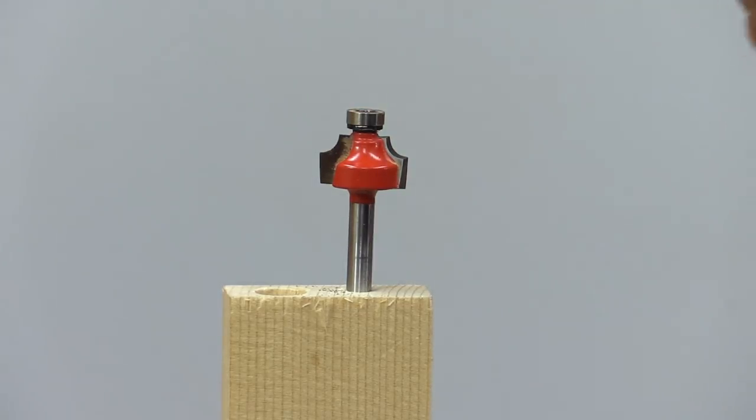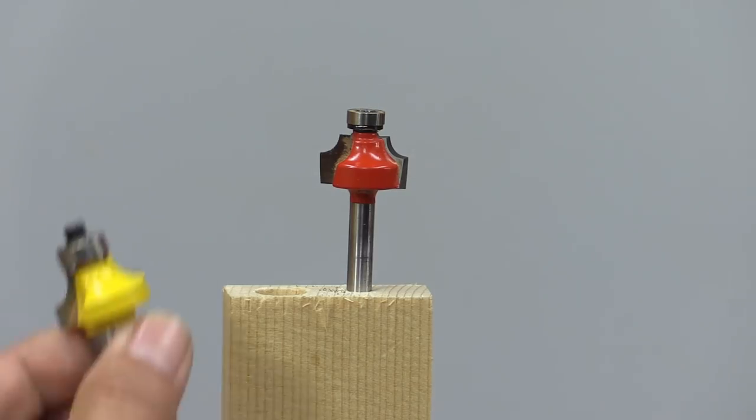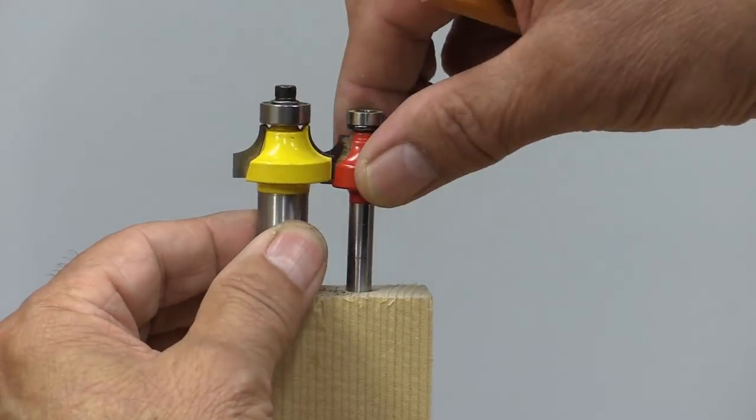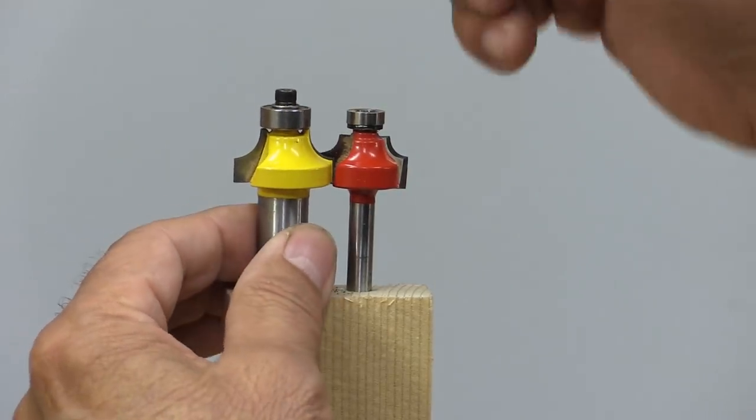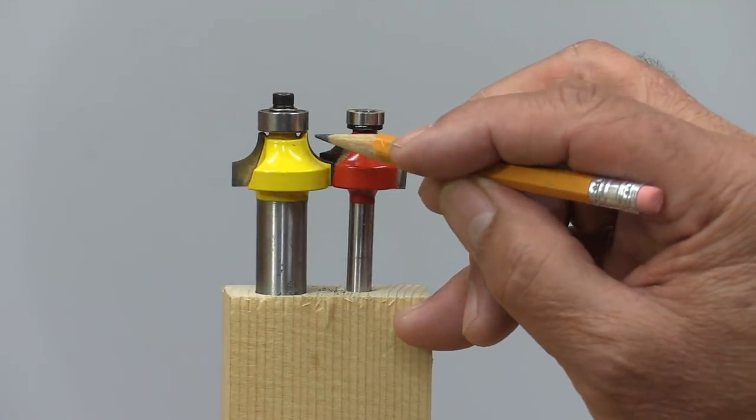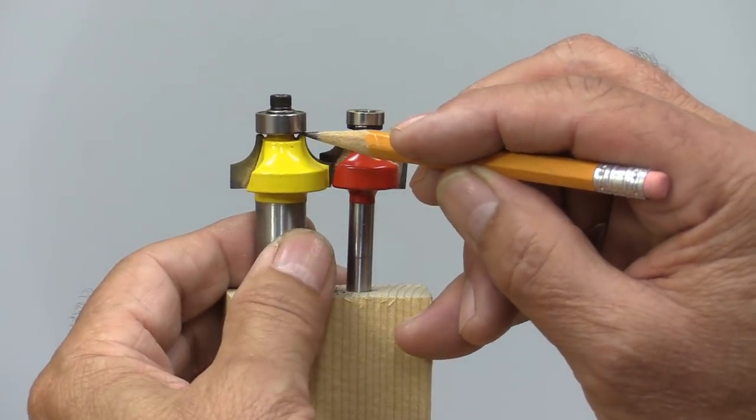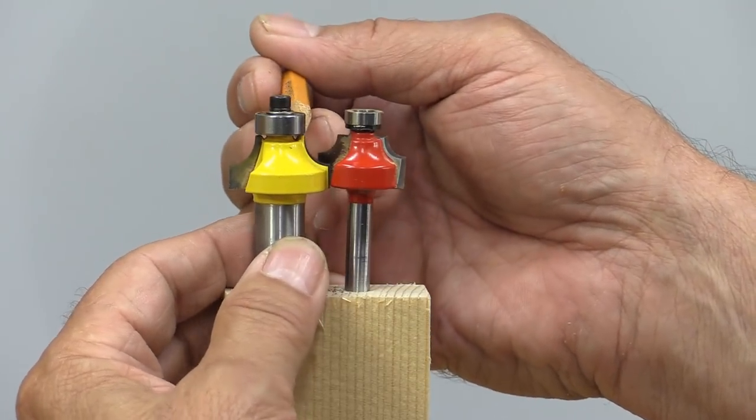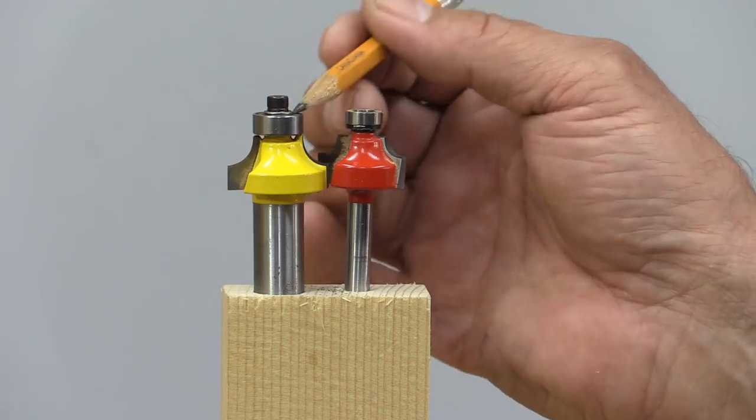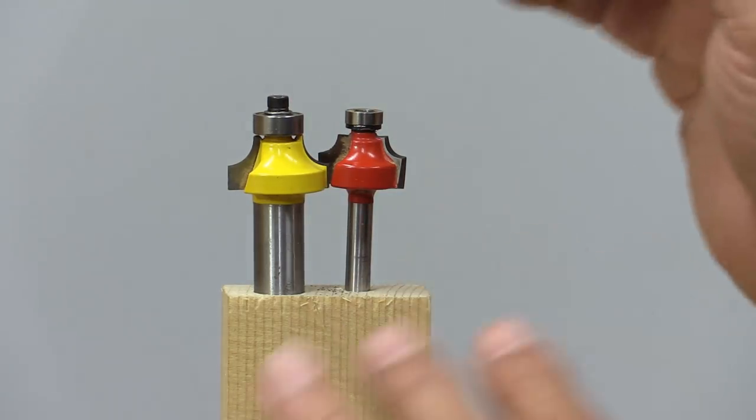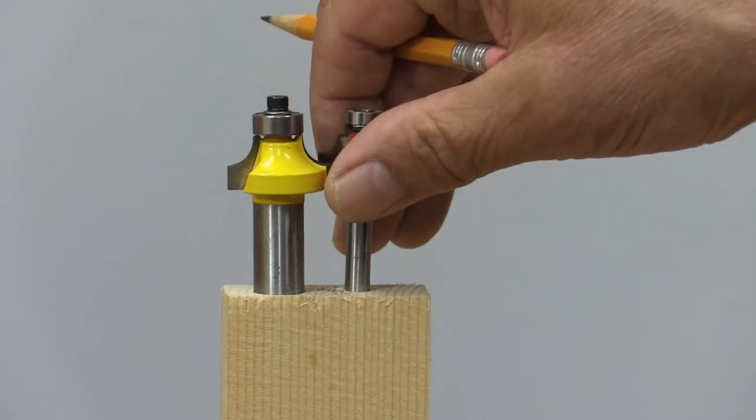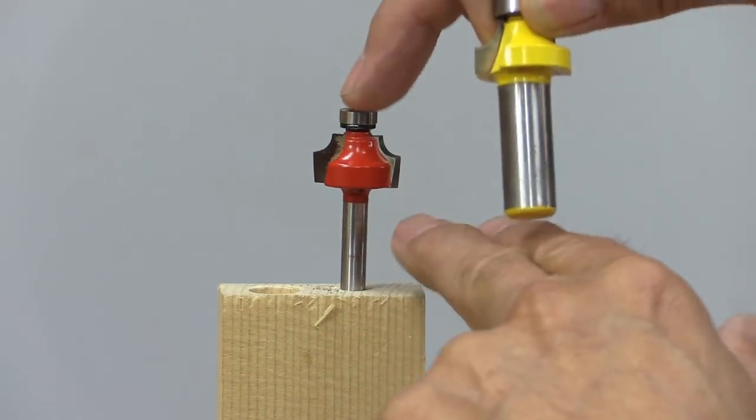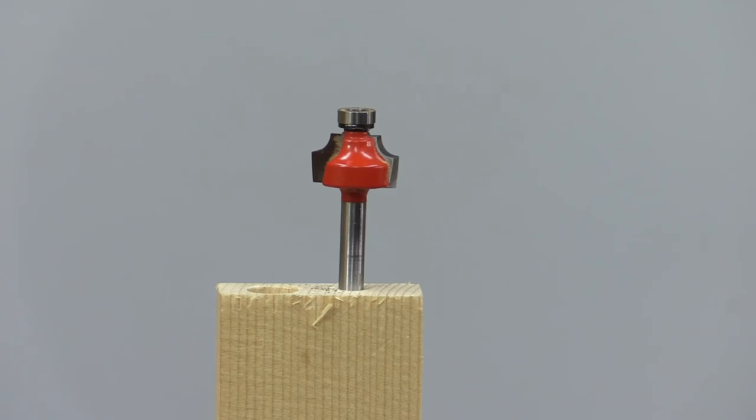But you know what? Not all bearings, or not all router bits rather, are like that. And I'm not criticizing this bit, it's just a different bit. It's the same round-over. But if you look closely, you'll notice that there's still paint in the very top here. In fact, one of these is actually quite a bit taller than the other. So you really can't do that with every bit. So you're going to have to look at them and maybe ask some questions to see if they do that. But with some bits, you can actually get different profiles. And that's what we're going to look at today.